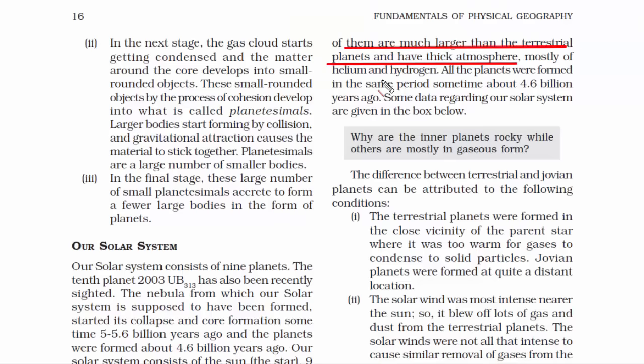All the planets were formed in the same period, sometime about 4.6 billion years ago. This clearly proves the fact that whatever phenomenon caused these planets to exist is actually true — which is the Big Bang theory and the universe expansion theory. Had it been the fact that all the planets came into existence at their own different times, it would be difficult to argue what actually happened. If everything happens because of one reason, then it is easier to study and understand.